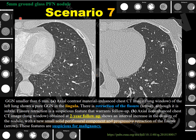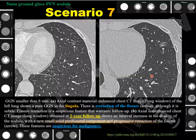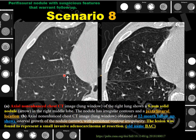Scenario 7: A 5 mm perifissural nodule with ground glass opacity and irregular outlines. At two-year follow-up, increased nodule density, soft tissue component at the fissural side, and distortion of the fissure were noted — highly suspicious for malignancy. Scenario 8: A juxtafissural nodule of approximately 5 mm in the right middle lobe. At 12-month follow-up, it increased in size and density with irregular, spiculated outlines. Histopathology confirmed small invasive adenocarcinoma at resection.